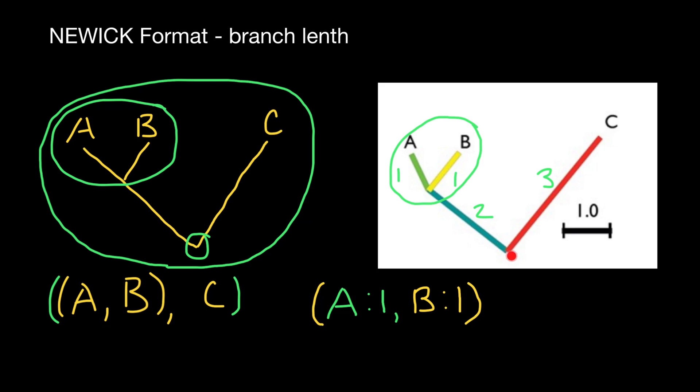Which leads from common ancestor here to common ancestor of the species A and B. So we add colon and we put 2, which specifies the length of this branch leading to this common ancestor.